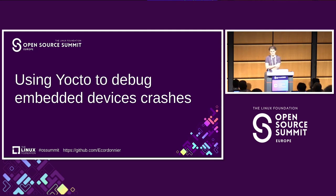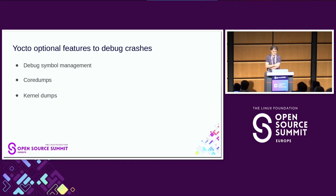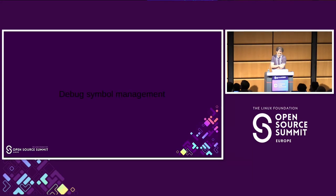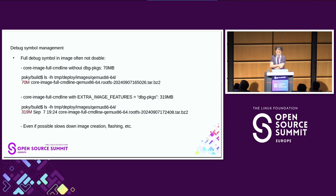Embedded devices have their own set of constraints and difficulties due to limited storage and bandwidth, so it's often very hard to debug this kind of crashes. Today I will talk first about classical debug symbol management with Yocto, then about core dumps using systemd, and finally about kernel dump to debug kernel crashes. The first topic is debug symbol management.